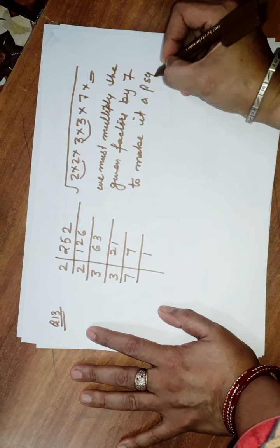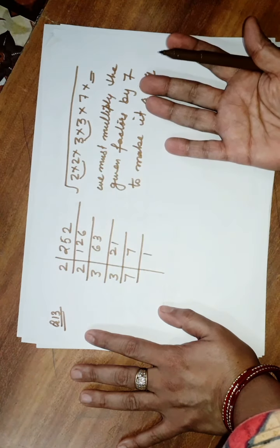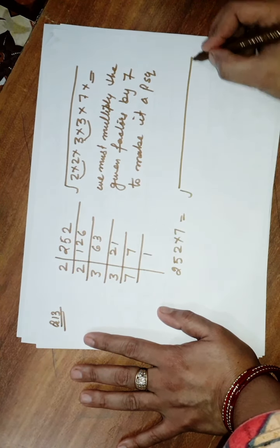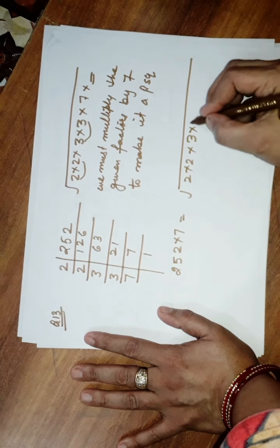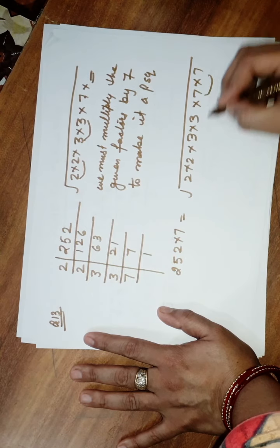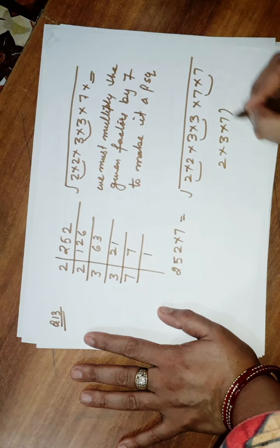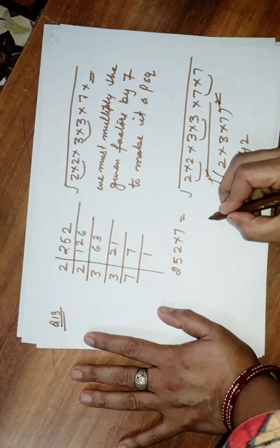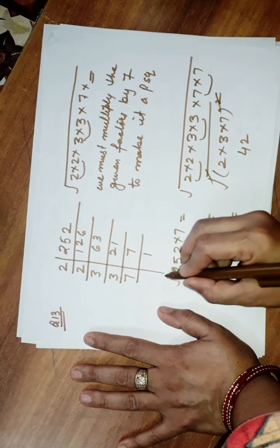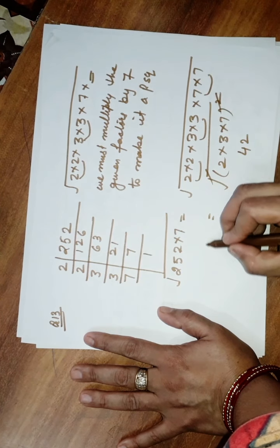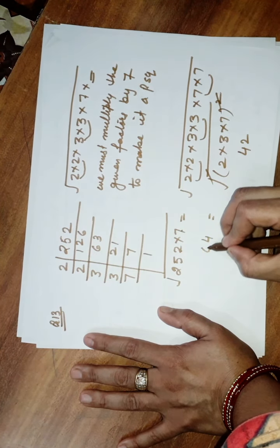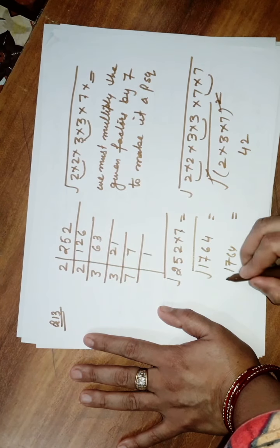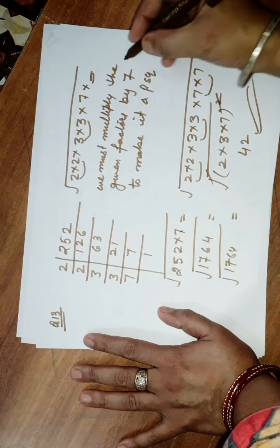Now, after making it a perfect square, we find the square root. 252 × 7 gives us 2 × 2 × 3 × 3 × 7 × 7. The square root cancels out the pairs: 2 × 3 × 7 = 42. Verifying: 7 × 14 = 98, carry; working through — the square root of 1764 is 42. So your answer is: multiply by 7, and the square root of the perfect square is 42.